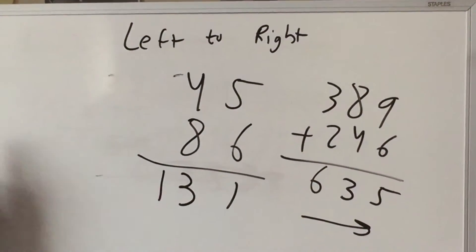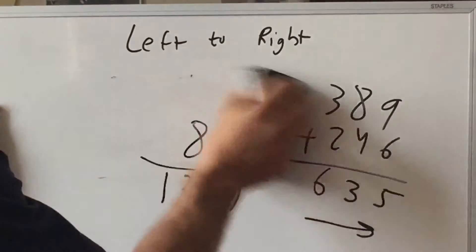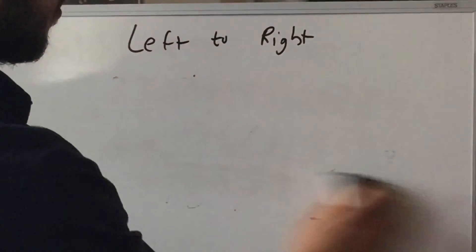Note again we're working left to right. You're gonna have to practice this. Now let's try the multiplications from last time. I think we were doing thirty eight times ninety one.